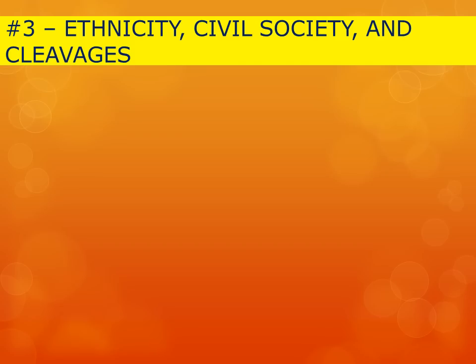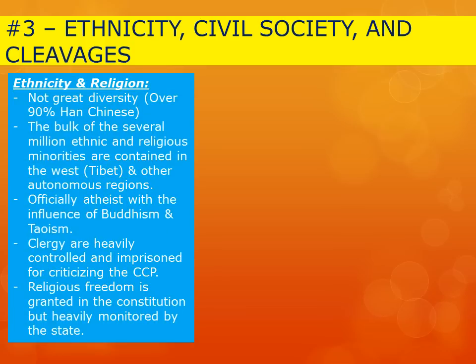Number three is the role of ethnicity, civil society, and cleavages in Chinese society. In terms of ethnicity and religion, China is not exactly the most diverse of all countries, as over 90% of its population is considered Han Chinese. However, there are still millions of ethnic and religious minorities, mostly contained in the western part of the country, with the biggest bulk coming in Tibet. China is officially an atheist country, but has large influences of Buddhism and Taoism in various portions.